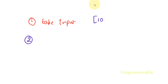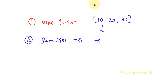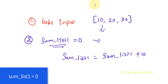For example, with 10, 20, and 30, I will take a variable called sum_list1 and initially set its value to 0. I add the first element: sum_list1 = sum_list1 + 10, so it becomes 10. Next I add 20: 10 plus 20 becomes 30. Then I add 30: 30 plus 30 becomes 60. In this way we get the sum of numbers in the list.